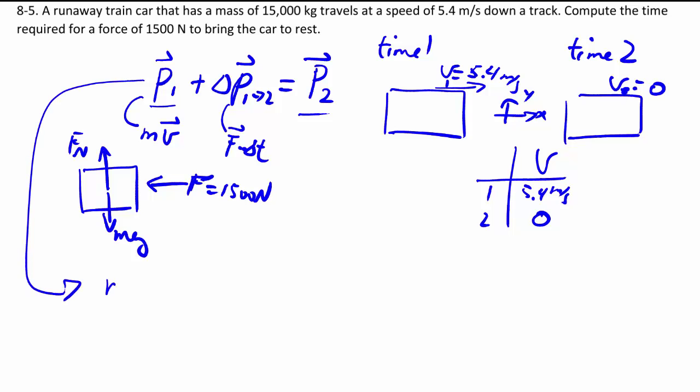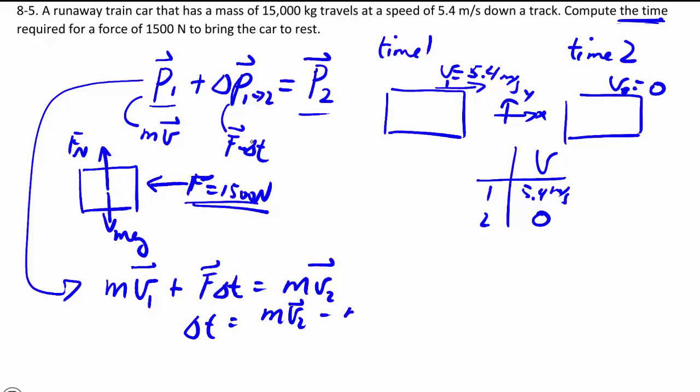So then starting away from the top, we have m v1 plus f delta t is equal to m v2. We can plug things in. The only force that we have to care about is of course this force because the mg and the fn, not only are they not in the x direction where we care about, but we also know that they cancel out because the car isn't accelerating upward or downwards. So here we're trying to solve for delta t because we're asking for the time. So isolating t, we have m v2 minus m v1 divided by f.